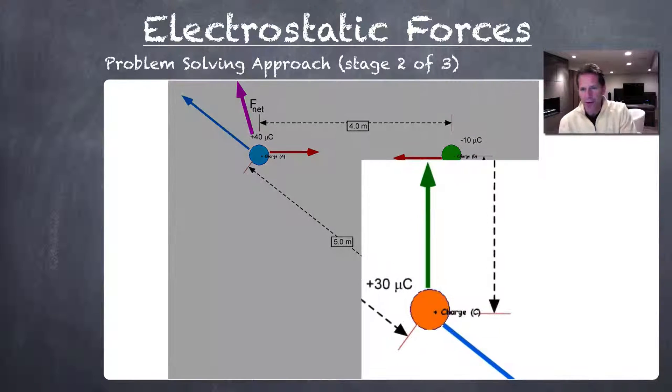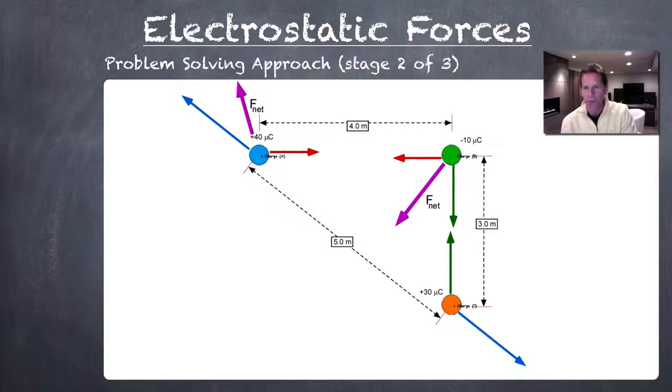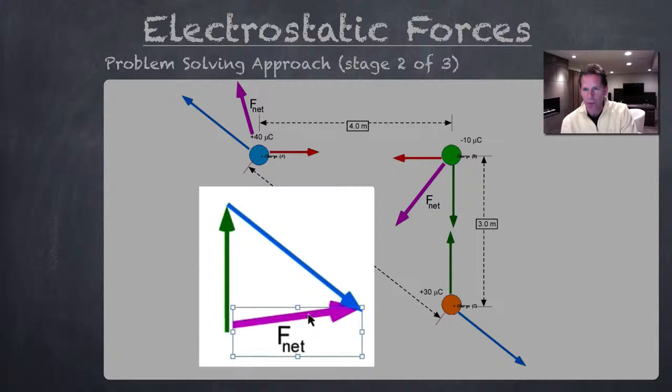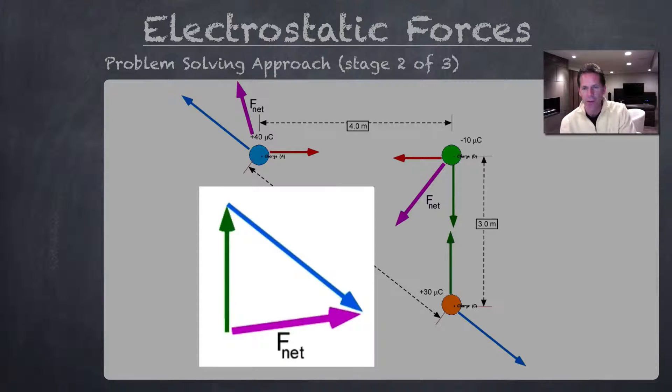Finally, let's build the vector diagram on the positive 30 microcoulomb charge. We take those two vectors from the free body diagram. We combine them, add them tip to tail. The resultant vector, or the net force, will be from where we started to where we finished, just very slightly to the north of east.